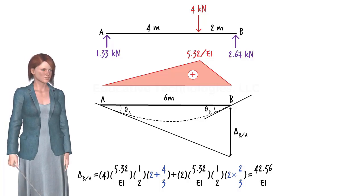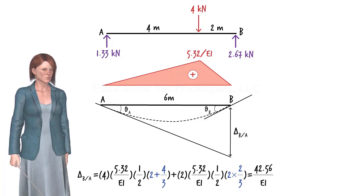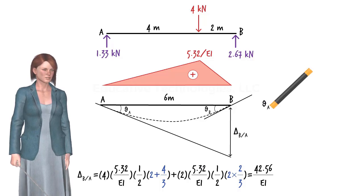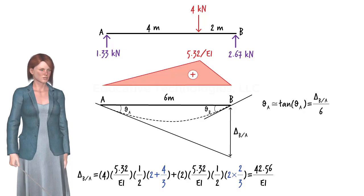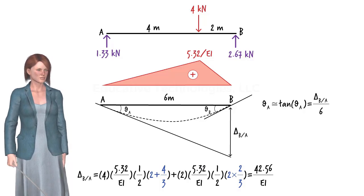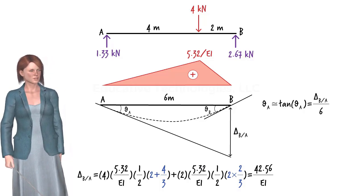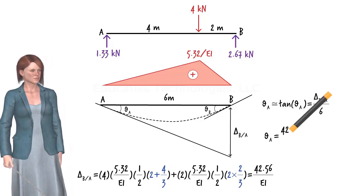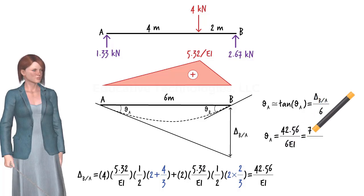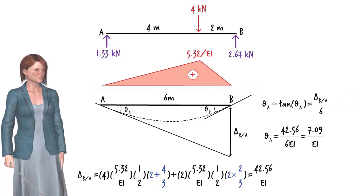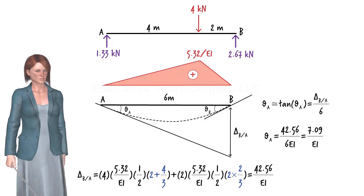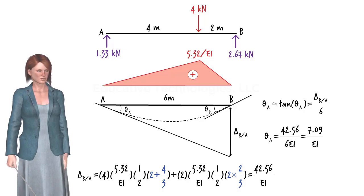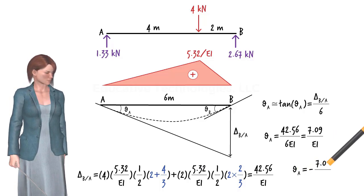Further, since beam rotations are assumed to be small, we can write that theta A equals tan(theta A) equals delta BA divided by 6. Please keep in mind that this is a negative slope, so in a strict sense we should write the negative value.